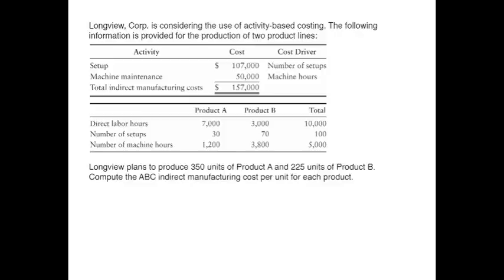Longview plans to produce 350 units of product A and 225 units of product B. We need to compute the activity-based costing indirect manufacturing cost per unit of each product.